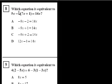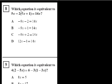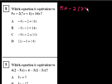We're on problem number 8. They ask us which equation is equivalent to 5x minus 2 times 7x plus 1 equals 14x. I'm guessing they just want to simplify this a little bit and see if we get to one of these choices. So let's do that. We start with 5x minus 2 times 7x plus 1 is equal to 14x.